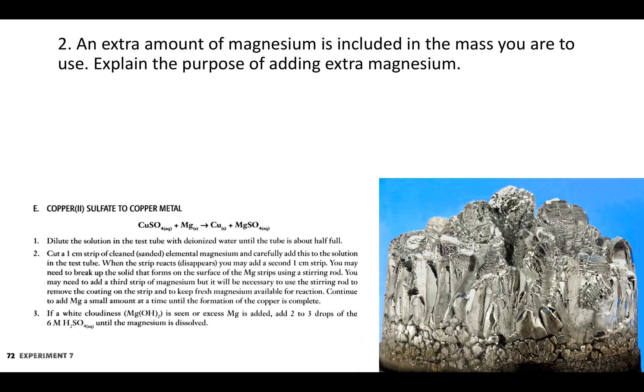So if you look at Part E, this is where you use the magnesium. And specifically, at the end of Step 2, you can see it says, continue to add magnesium a small amount at a time until the formation of copper is complete.